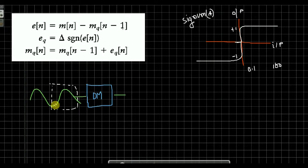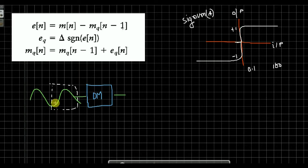The delta modulation has the previous quantized value and the incoming signal compared in the modulator. Suppose this signal is the sampled value — the sampled value will be quantized. Then we compare the previous quantized value and the incoming signal to the sampled value. This is the process of delta modulation.